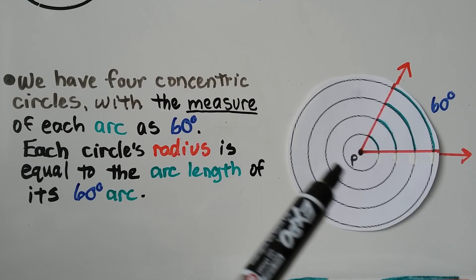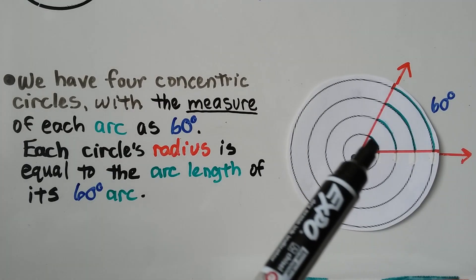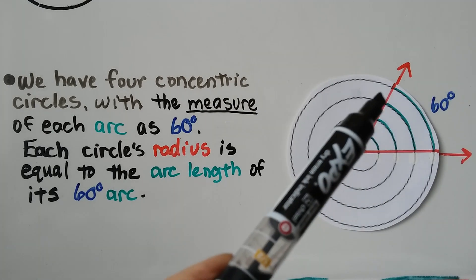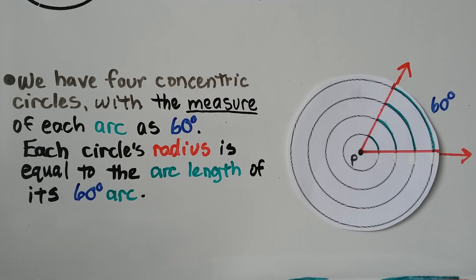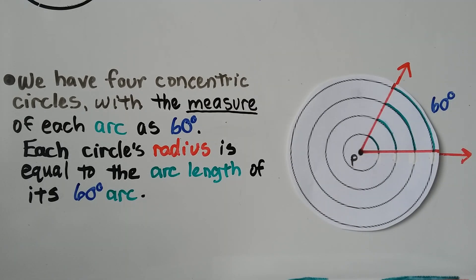Take a look at this. We have 4 concentric circles, with the measure of each arc as 60 degrees, because that's the central angle. Each circle's radius is equal to the arc length of its 60-degree arc.